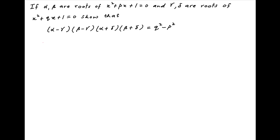We are given that alpha and beta are roots of the quadratic equation x² + px + 1 = 0. Therefore, the sum of the roots alpha plus beta is equal to minus p, and the product of the roots alpha times beta is equal to 1.